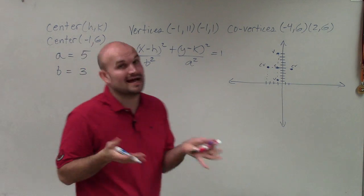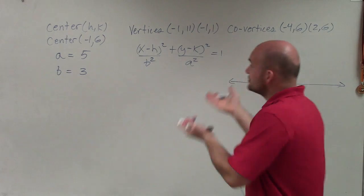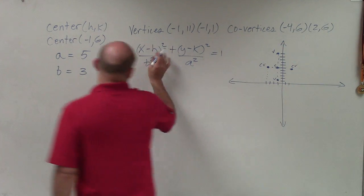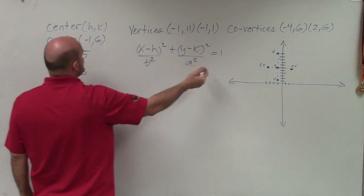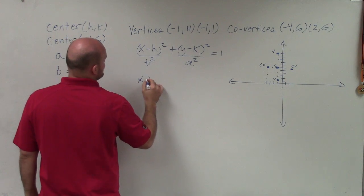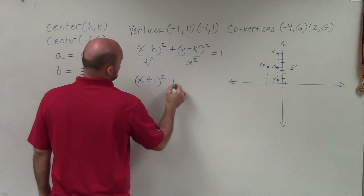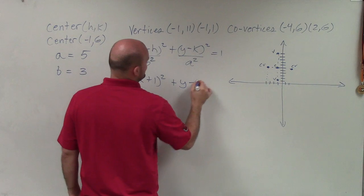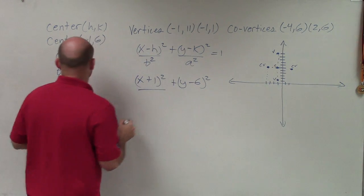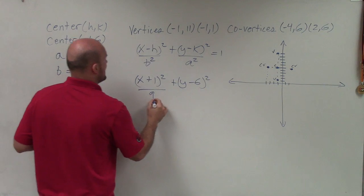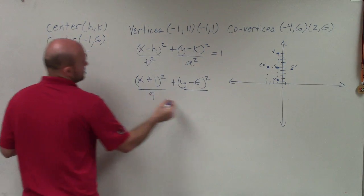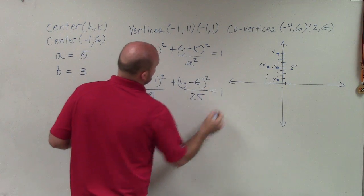So now I know what a is, I know what b is, and I know what h and k are. So now I just need to plug them into my formula. Now remember, the formula is opposite of h, opposite of k. So it's going to be (x+1)² over b² which is 9, plus (y-6)² over a² which is 25, equals 1.